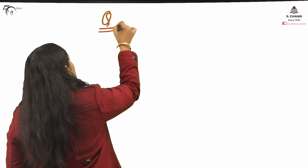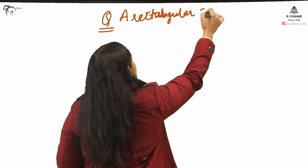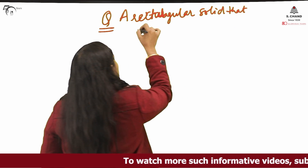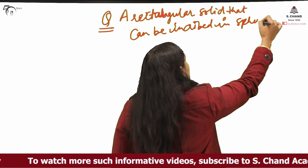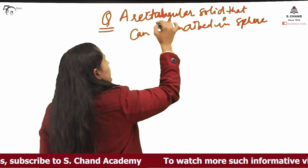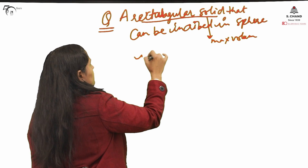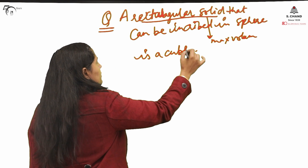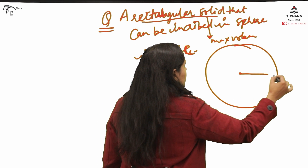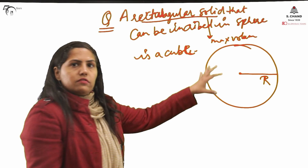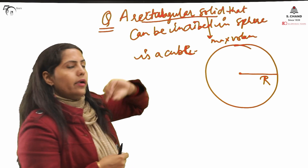The problem is: show that a rectangular solid of maximum volume that can be inscribed in a sphere is a cube. If there is a sphere and you want to insert any rectangular solid inside that sphere, then this problem is saying that it will 100% be a cube.